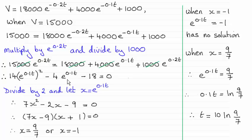So getting that quadratic equation then in e^(0.1t), I've let x equal e^(0.1t) and I've divided through by 2. So that gives me a nice quadratic equation which factorizes leading to x equals 9/7 or x equals minus 1.